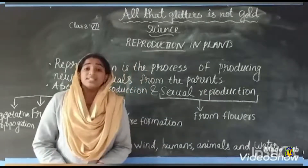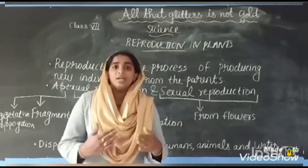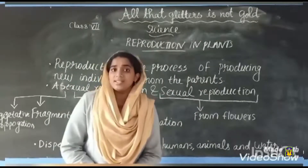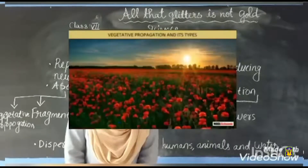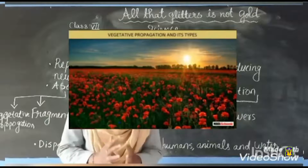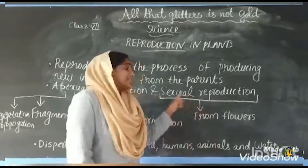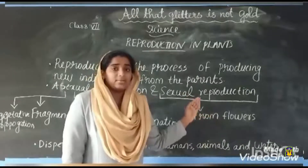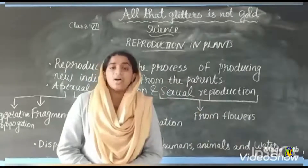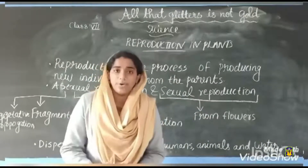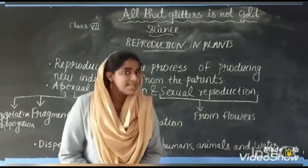After that we discussed about sexual reproduction. New plants are obtained from seeds. Which one is the reproductive part of a plant? The flower is the reproductive part of a plant. So sexual reproduction means it is through the flower that seeds are obtained, and new plants are obtained from those seeds.